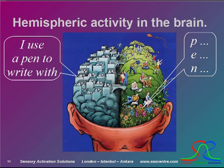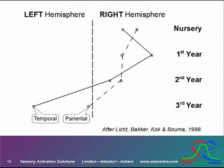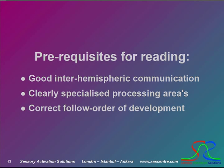In 1988, researchers in the Netherlands measured this with a large number of school-age children. They found that the activity in the auditory processing centers in the temporal part of the brain shifted considerably from the right to the left during the years of learning to read. The activity in the parietal motor processing centers also started to shift to the left as the children learned to write. So, there is a third prerequisite to learning to read and write: the correct follow-order in the development of the brain — first on the right, but then handing over the processing load to the left-hand side. I've taken you on this journey through the two sides of the brain as it explains some of the difficulties that some people with dyslexia encounter.